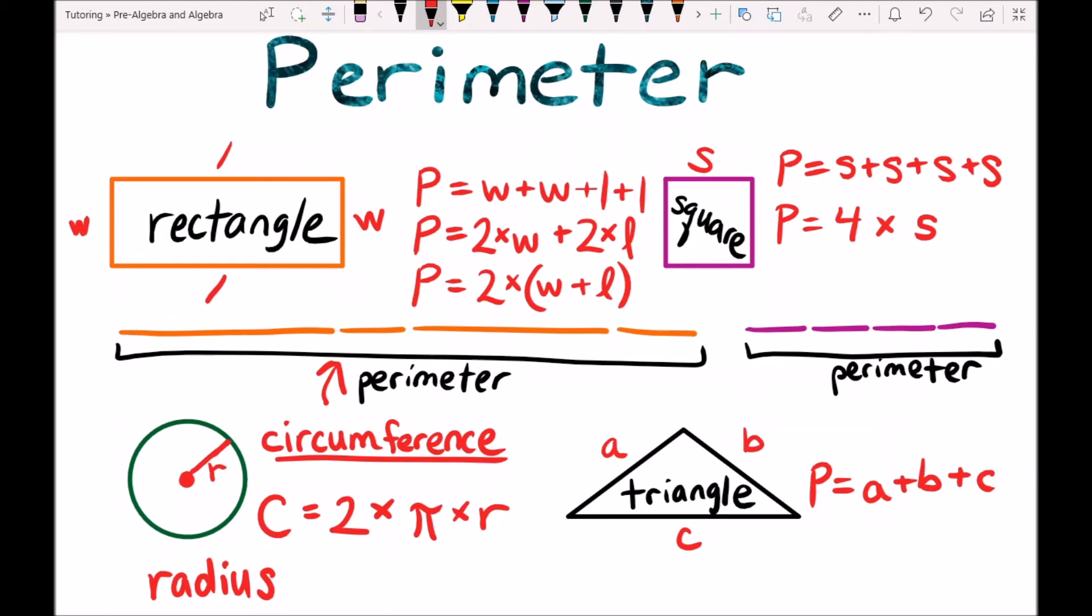And then pi is a Greek letter. So the Greeks have their own alphabet, and one of the letters is pi which is spelled pi. And pi has a value of about 3.14.